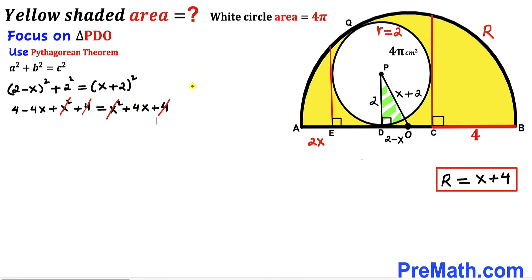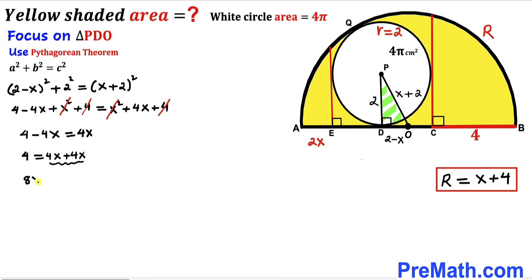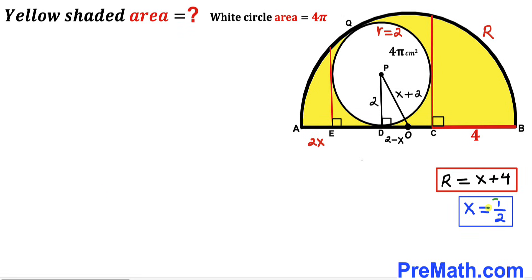The x² terms and constant 4 cancel on both sides. Moving −4x to the right gives 8 = 8x, so dividing both sides by 8 yields x = 4/8 = 1/2.